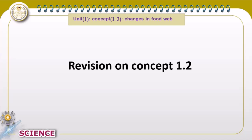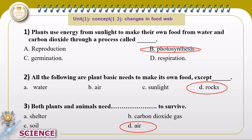Let's start with land use and energy from sunlight. Plants need energy which comes from sunlight. The plant uses this energy to do a process called photosynthesis. The following are basic needs for a plant to make food: water is a basic need, air is a basic need, sunlight is a basic need, but rocks are not a basic need. Both plants and animals need air to survive.